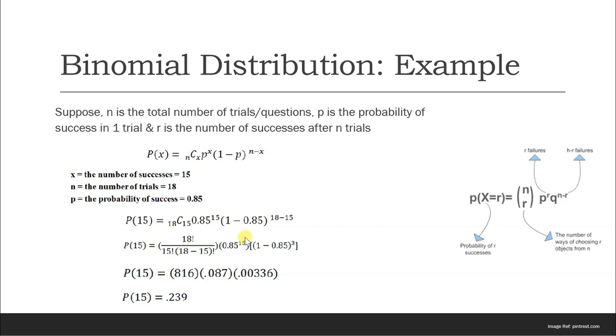After putting everything in this formula, you can see that the number of trials has been induced in the formula: 18 factorial by 18 minus 15 factorial, then 15 factorial to remove the duplication. These two values are the probability of success and probability of failure. After we evaluate this formula, we get these values, and this is the percentage of probability that we are getting for p of 15. This is how we execute binomial distribution in the mathematical way.